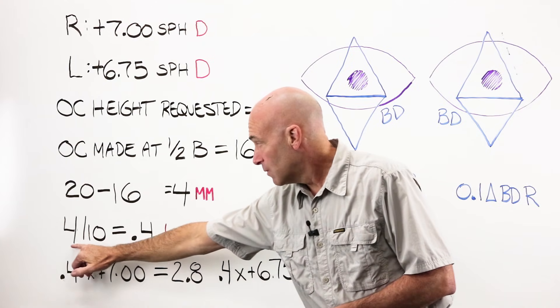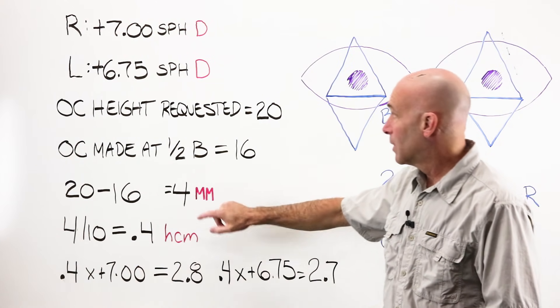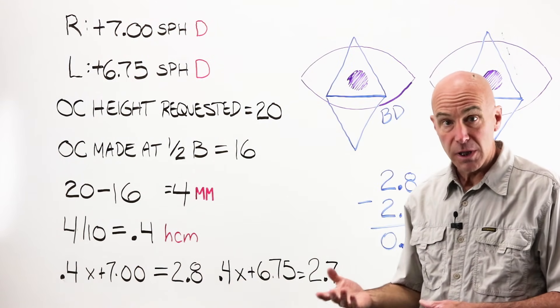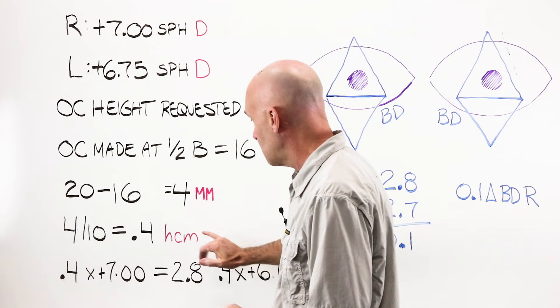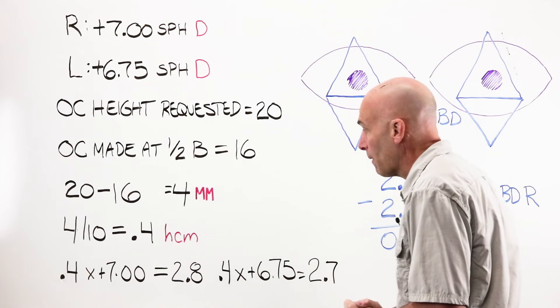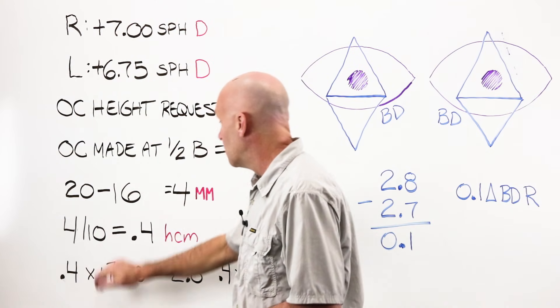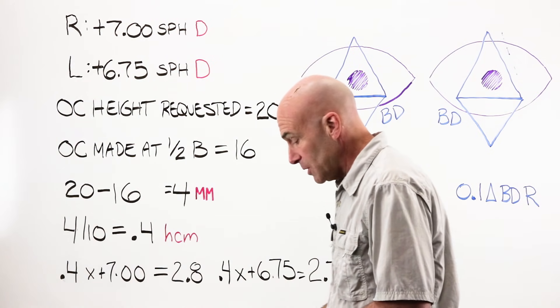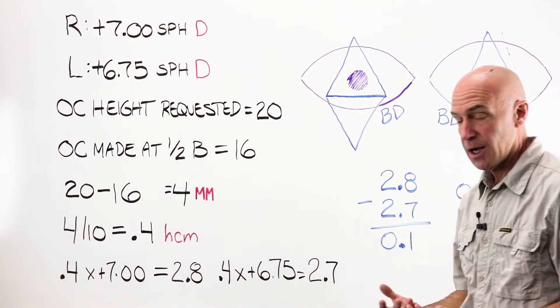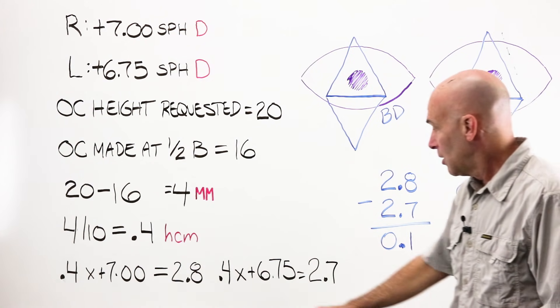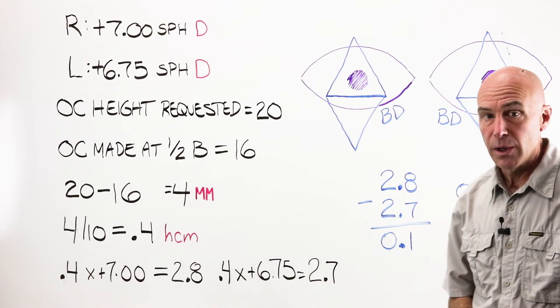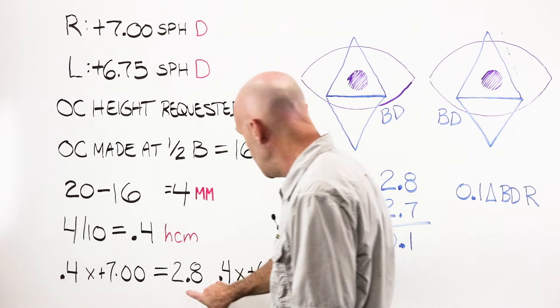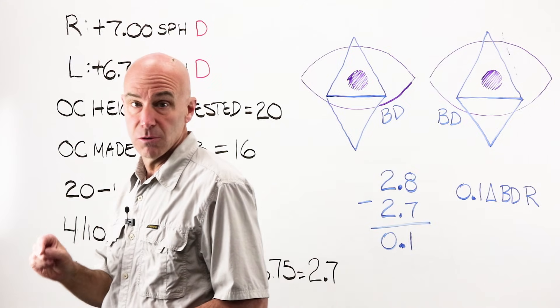My lens OCs are going to be four millimeters below where I actually wanted them to be. Four millimeters, four divided by ten is .4 centimeters, which is what we're working with when we're working with Prentice's formula. So you're going to have to account for that somewhere along the line. My HCM .4 times my 7 gives me 2.8 diopters of error. .4 times my 6.75 for my left gives me 2.7. These two numbers right now tell me absolutely nothing.